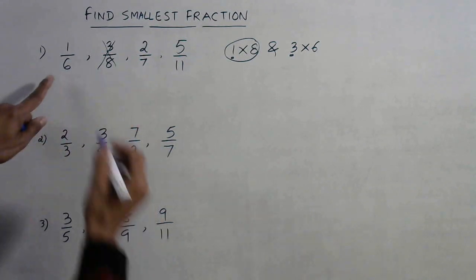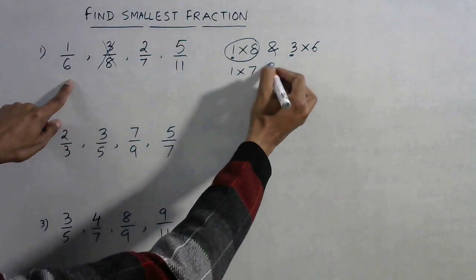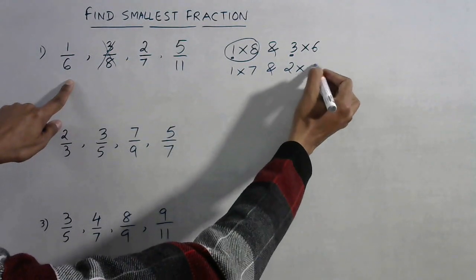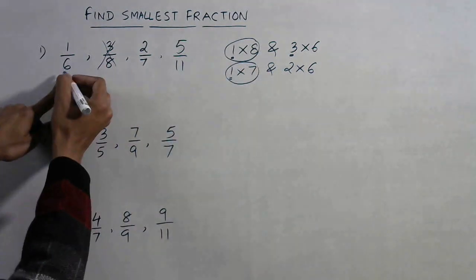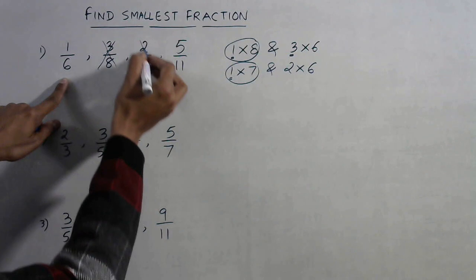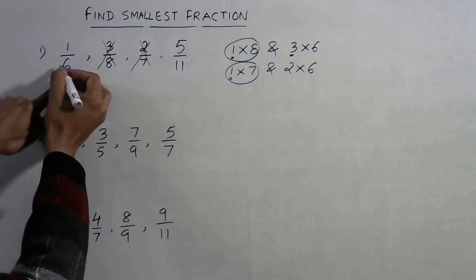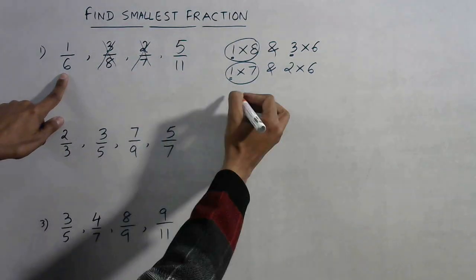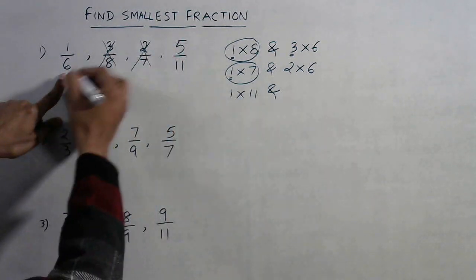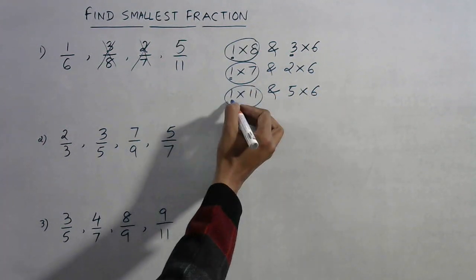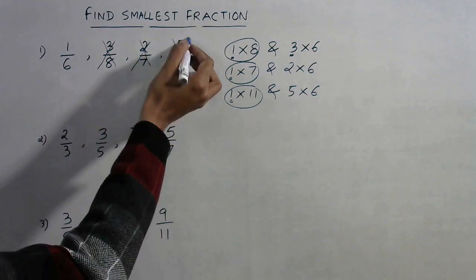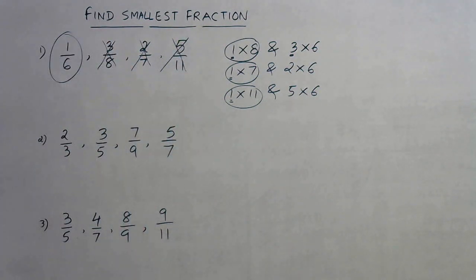Compare 1/6 with 2/7: 1 into 7 is 7 and 2 into 6 is 12. The smaller product belongs to numerator 1, so 1/6 is small and 2/7 is large — discard the larger. Now compare 1/6 and 5/11: 1 into 11 is 11 and 5 into 6 is 30. The smallest product is 11, and the numerator is 1, so 1/6 is the smallest fraction.